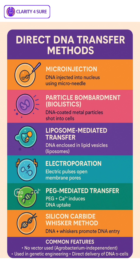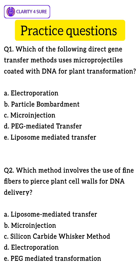Now let's discuss some practice questions. Look at the screen. First question: which of the following direct gene transfer methods uses microprojectiles coated with DNA for plant transformation? Look at the options and write the answers in the comment section. Next question: which method involves the use of fine fibers to pierce plant cell walls for DNA delivery? Look at the options and write the correct answer in the comment section.